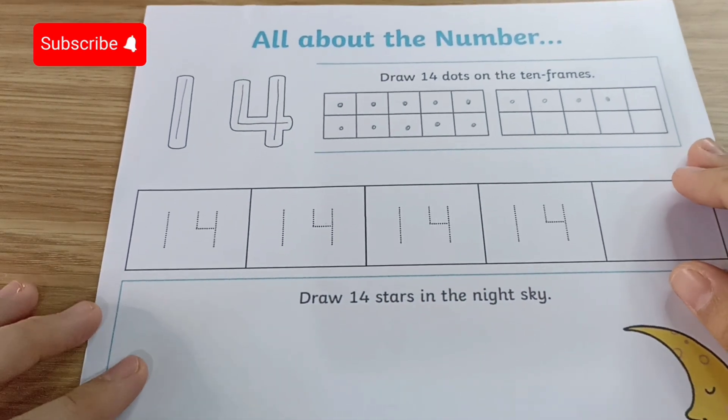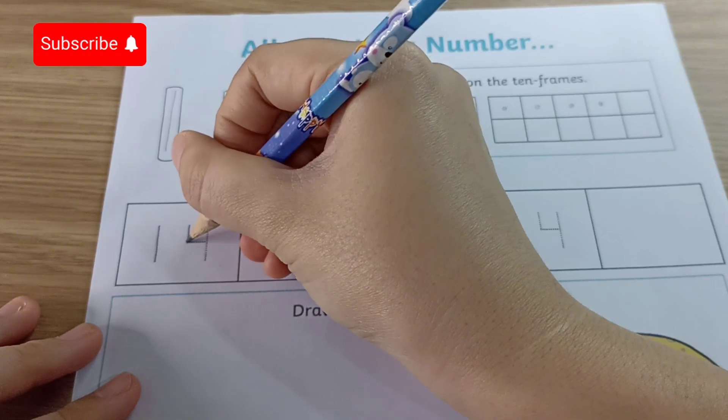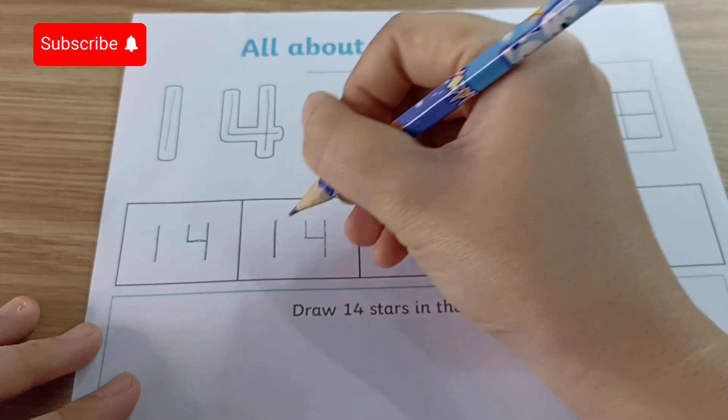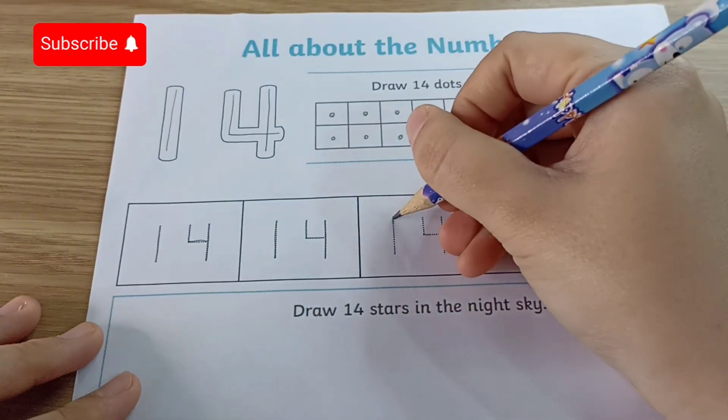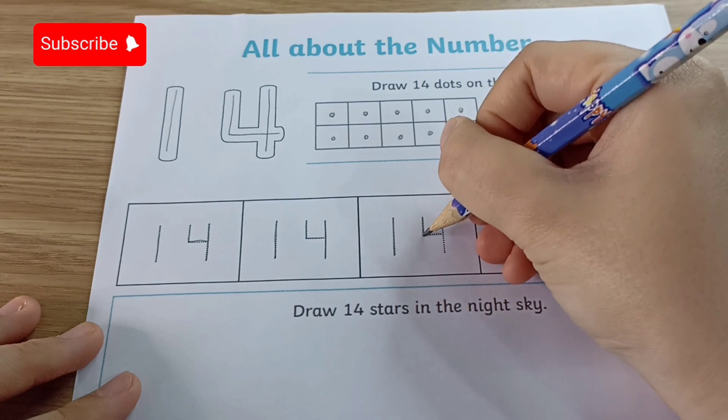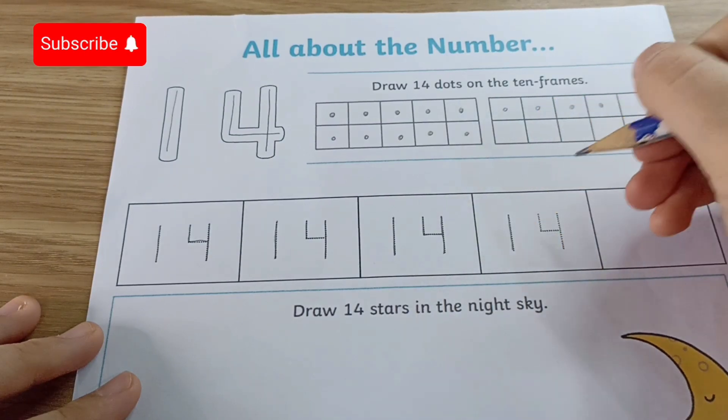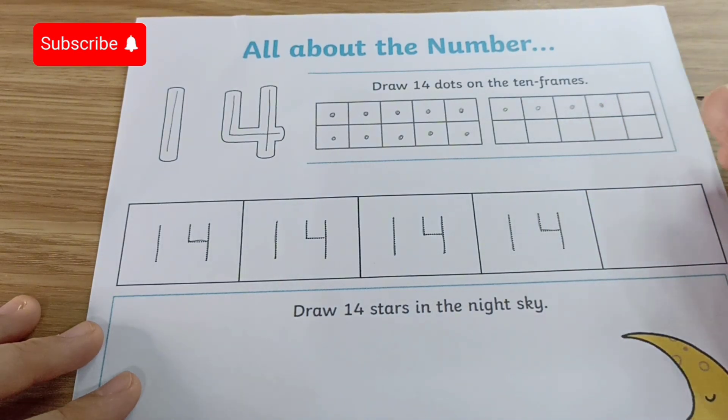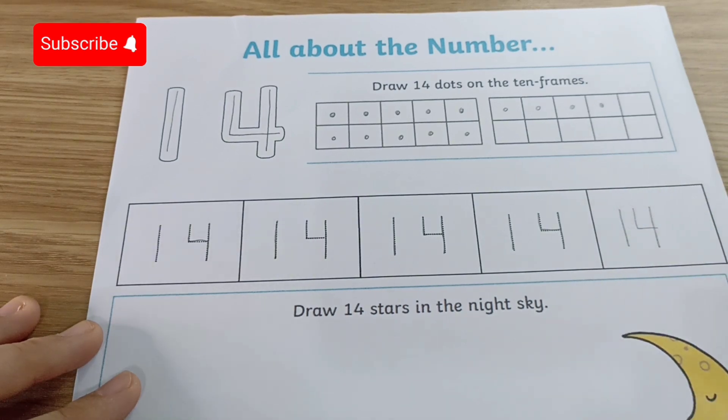Alright, now let's trace number 14. One and four. Make a line down, down to the right, and down one more. And down one more. Make a line down, down to the right, and down one more. Make a line down, down to the right, and down one more. Make a line down, down to the right, and down one more. Make a line down.